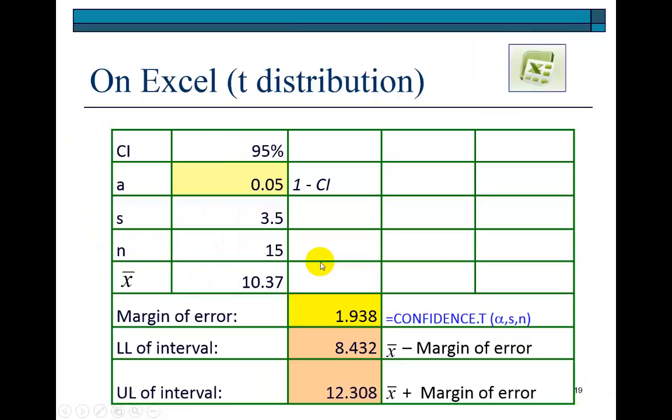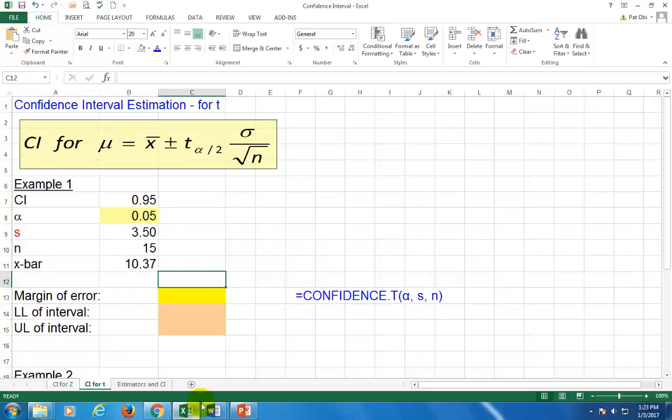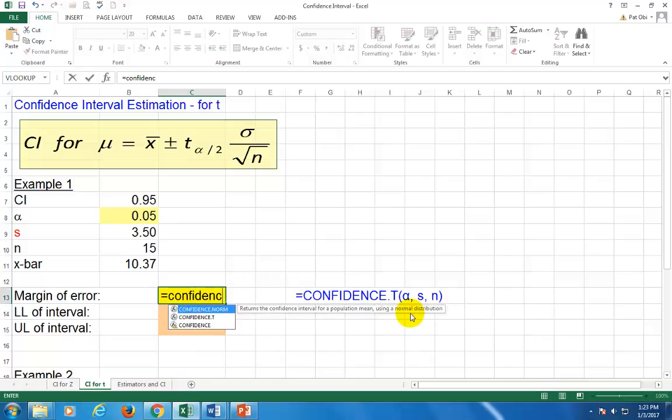We can also use Excel. This is the format. This is the input data and we wish to calculate the 95% confidence level. The function is confidence T. You can type lowercase or uppercase. Confidence T gives you the confidence interval for the population mean using student T distribution, which is what we want.